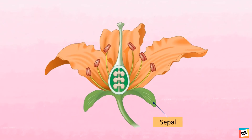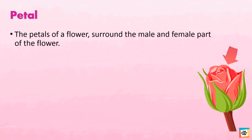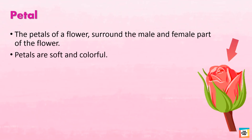The colorful and attractive part of a flower is called a petal. The petals of a flower surround the male and female parts of the flower. Petals are soft and colorful.